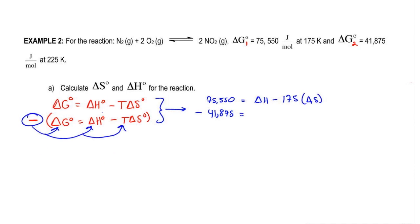So this delta H now becomes negative delta H. Here we add a negative sign, a negative times a negative gives me a positive. The delta H values now cancel out. Then we're going to get 33,675 equals 50 times delta S.